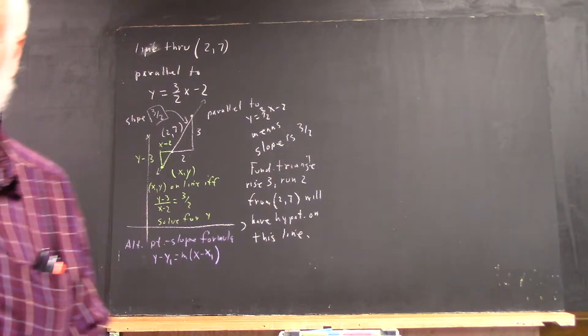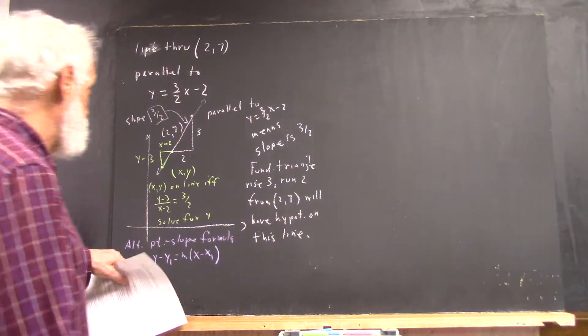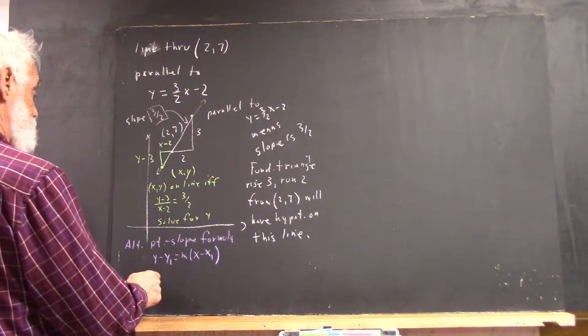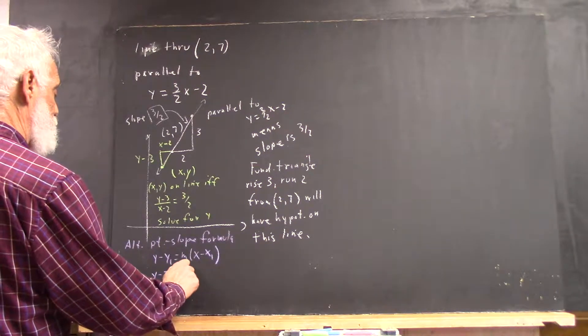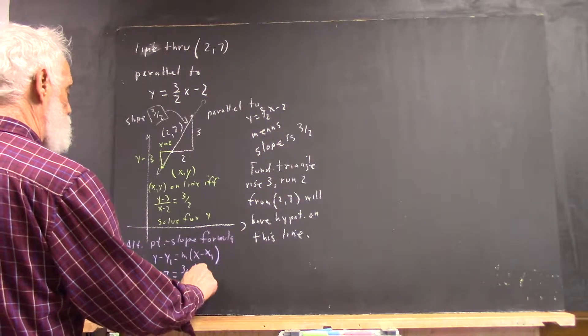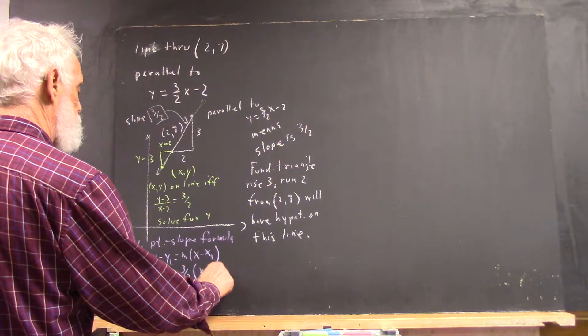Short advice video, and now we're going to use it. So, that's going to be y minus 7 equals 3 halves times x minus 2.